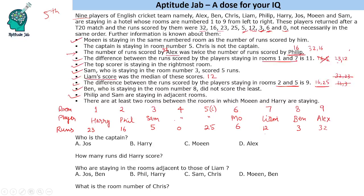We are left with just 2 people including the captain. Chris is not the captain. So Chris gets a score of 0 and is placed in room 4. The one remaining person is Joss, who is the captain in room 5 with 25 runs.